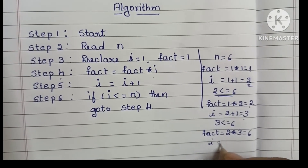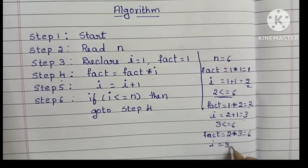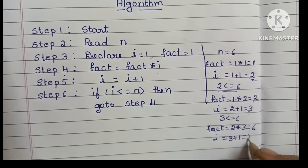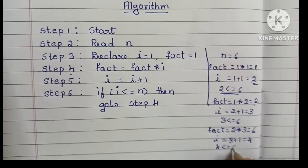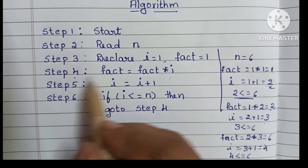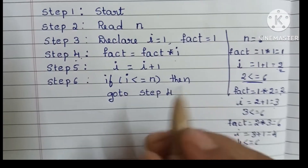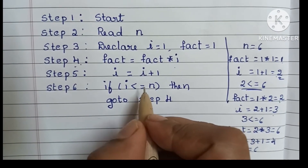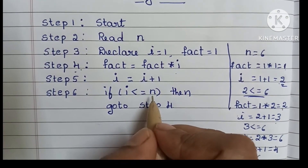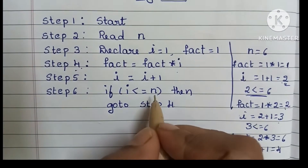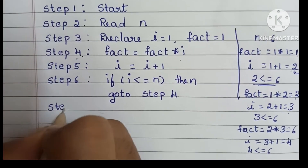i value becomes 3 plus 1, that is 4. We check again: 4 is less than or equal to 6 — true — so we go back to step 4. This loop continues until i becomes greater than n. When i is greater than n, it comes out of the loop and goes to step 7.